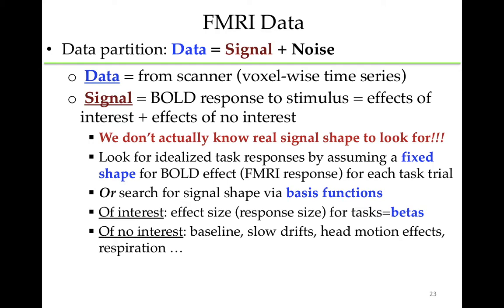Conceptually speaking, we divide the data into signal — things that we like — and noise — things that we don't like. The data comes from the scanner; in our case it's voxelized time series: perhaps 100,000 voxels through several hundred time points typically. The signal is the BOLD response to the stimulus: effects of interest plus effects of no interest. We don't know the real thing to look for in the data; this is not completely understood. So we look for idealized task responses, but we have to be aware that we're looking for an idealized response — we're just getting a crude approximation of the truth.